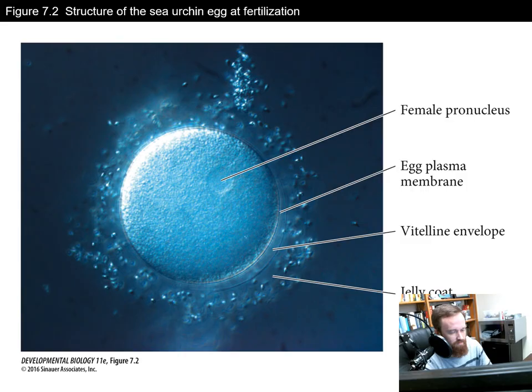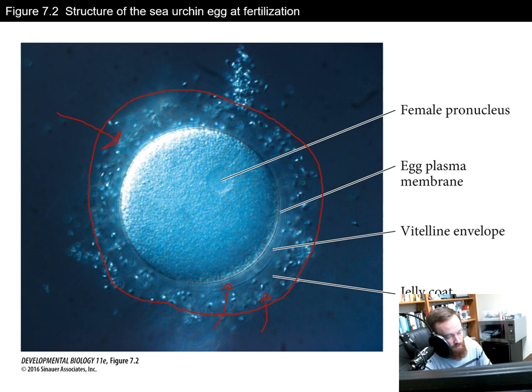Moving on to the egg — this is a sea urchin egg in the process of fertilization. Surrounding the egg is the vitelline envelope, and outside that is the jelly coat made of polysaccharides. The small white specks visible throughout the jelly coat are sperm making their way through it. Once through, they attach to the vitelline envelope via the acrosomal process.